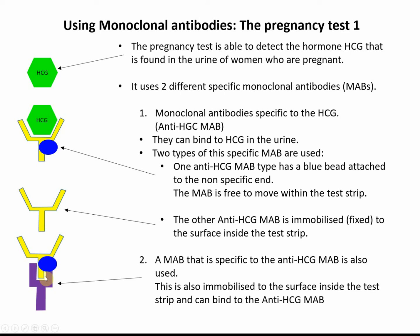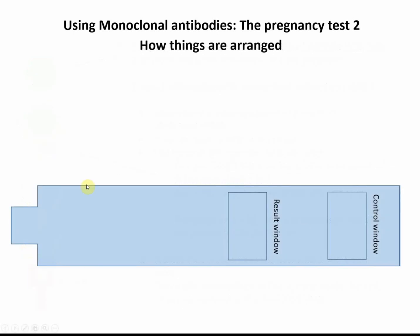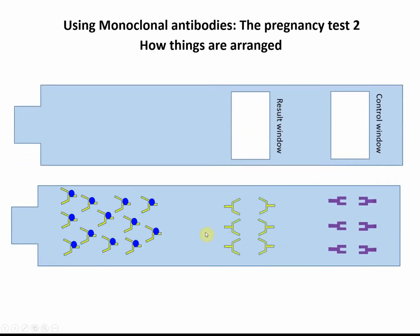So we're going to need all these components for the test to work. Here is our pregnancy test strip. What you have in the strip is mostly plastic with two windows that you can see the inside of — you can't really see what's going on underneath. If we remove the top cover, you can see there are a number of different antibodies in different places.